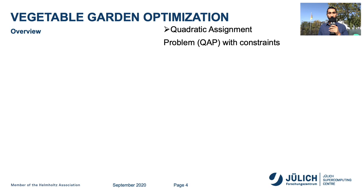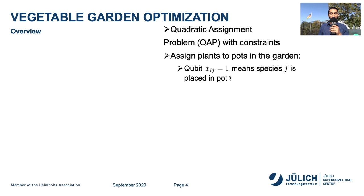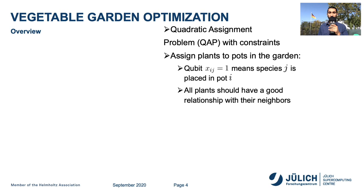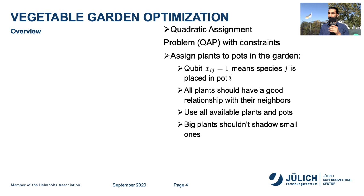The problem we are looking at is a quadratic assignment problem with constraints, where we want to assign plants to pots in the garden such that when a given qubit x is set to 1, the corresponding species is placed in a certain pot. Additionally, we want all plants to have a good relationship with their neighbors, use all available plants and pots, and we would like that big plants shouldn't shadow small ones.